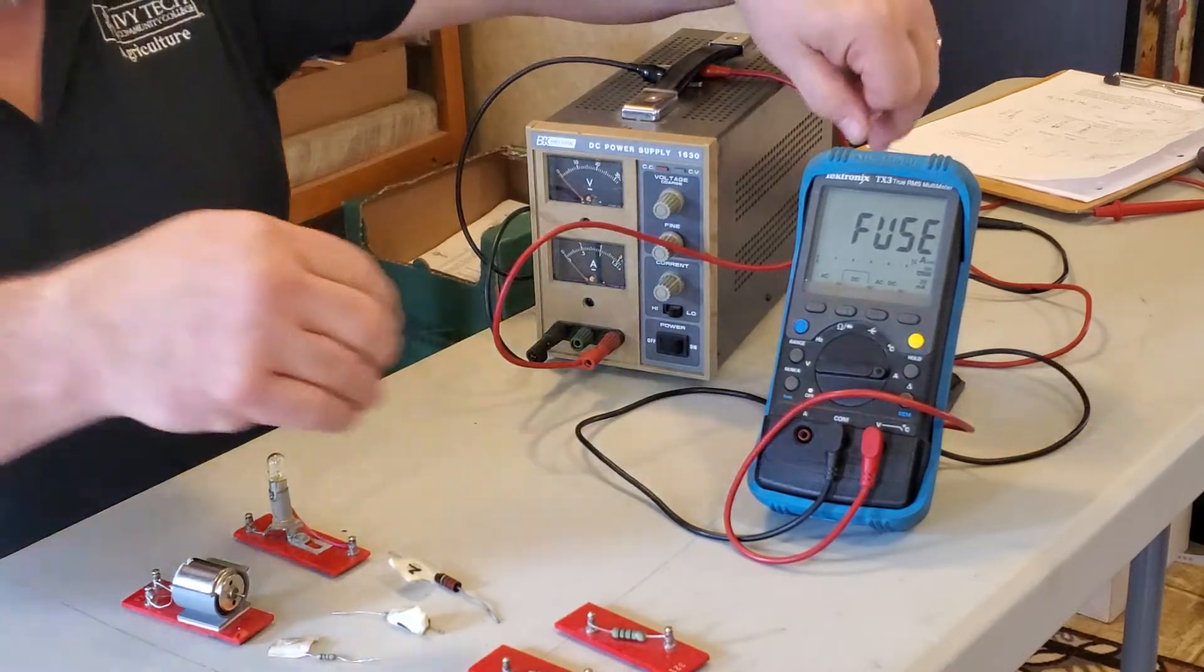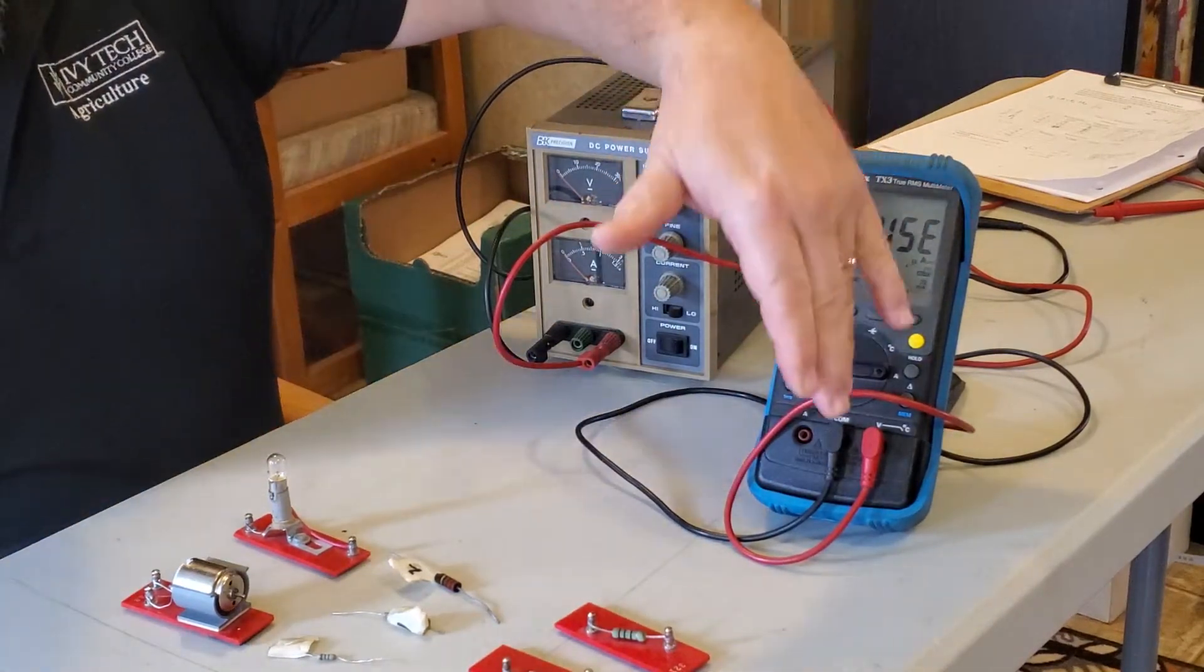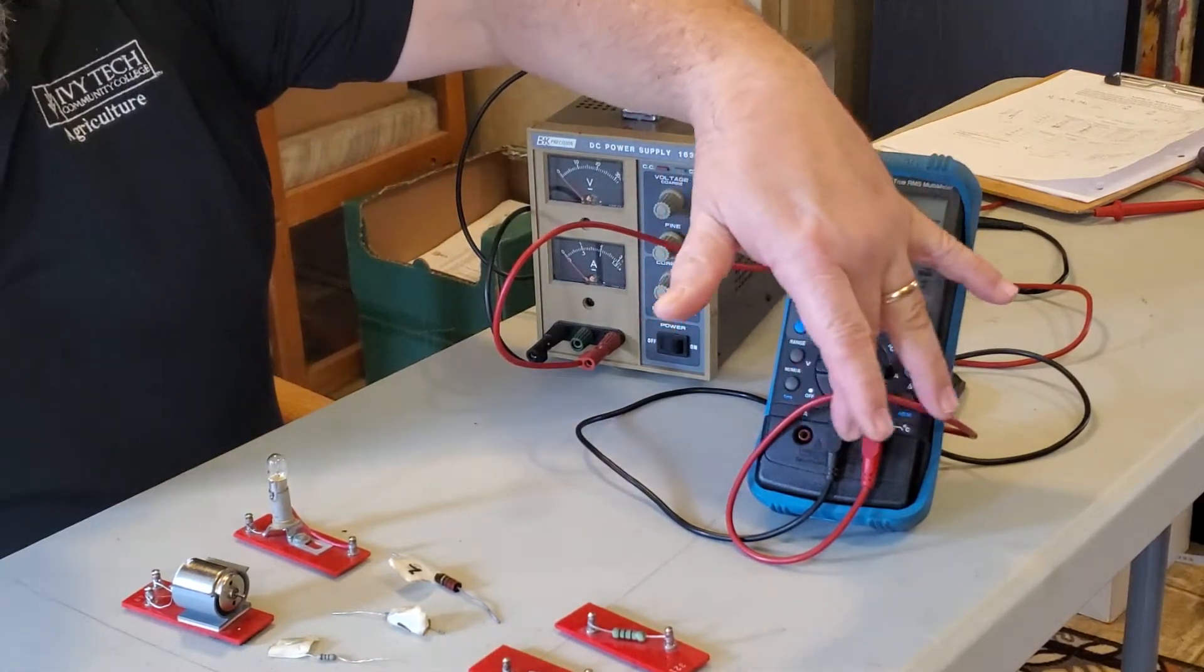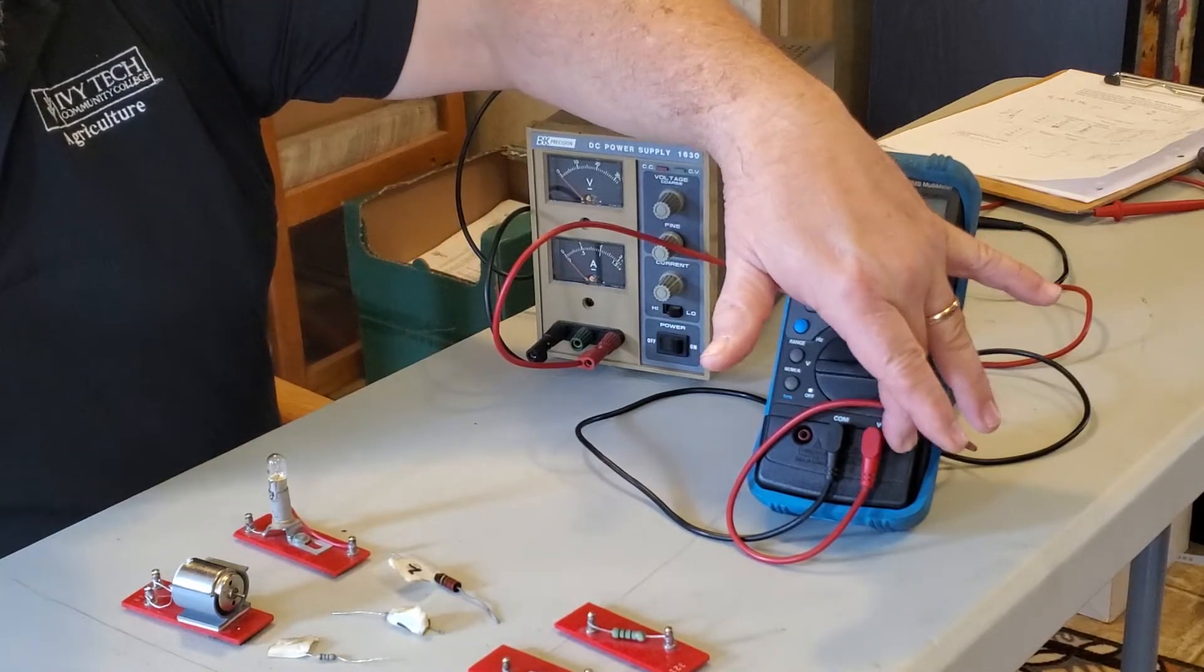A multi-tester will always have two leads, a red lead and a black lead. On a multi-tester, the black lead always stays on the common in the middle. Then the red lead, normally on the right, that would be volts and resistance or ohms.